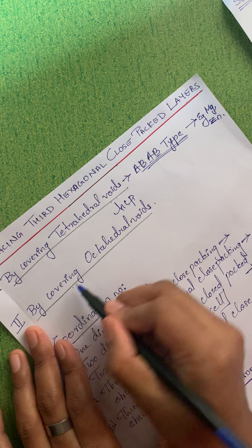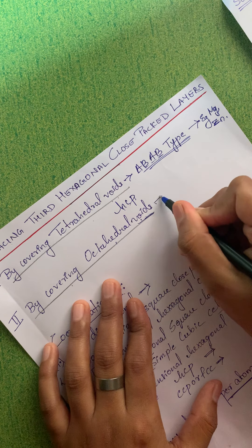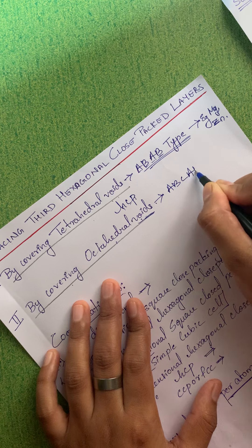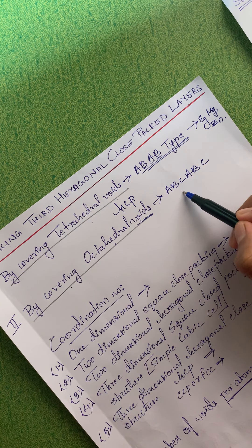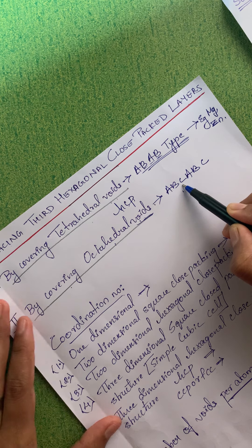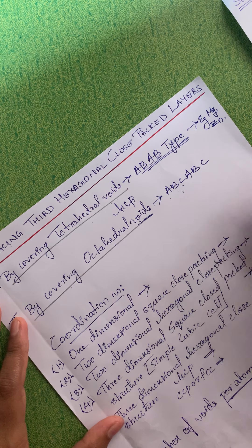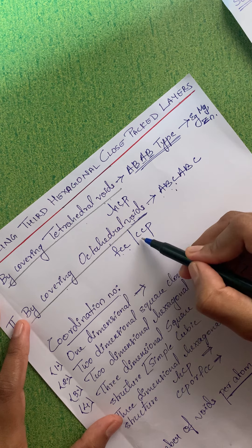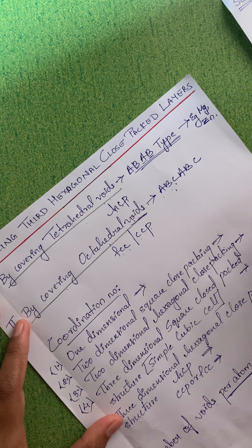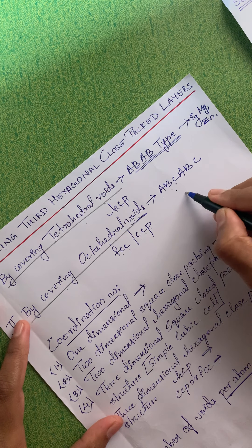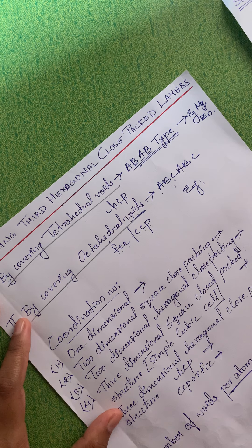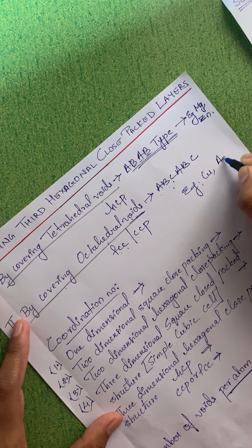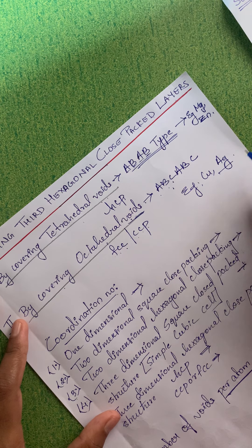When the third layer is placed by covering the octahedral voids, this leads to an ABCABC-type structure, where the third layer is entirely different from both the first and second layers. This leads to the face-centered cubic (FCC) or cubic close-packed (CCP) structure. Examples are copper (Cu) and silver (Ag).